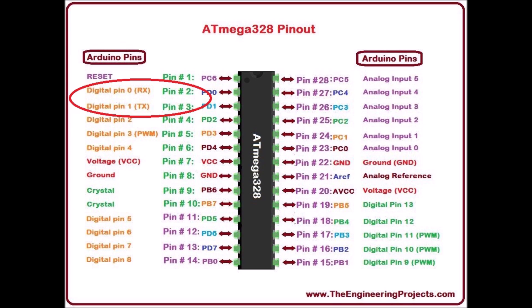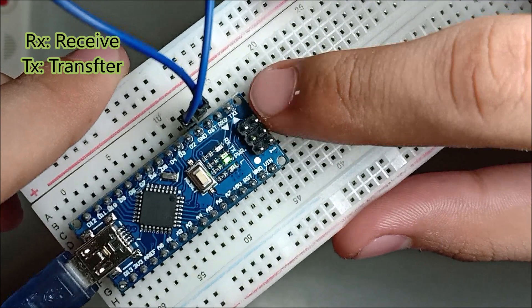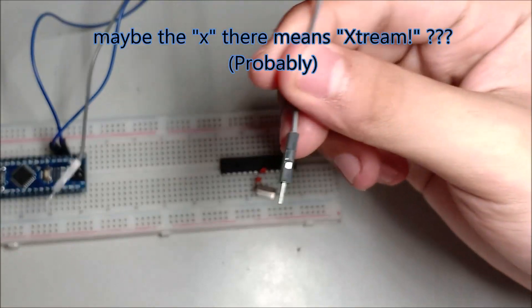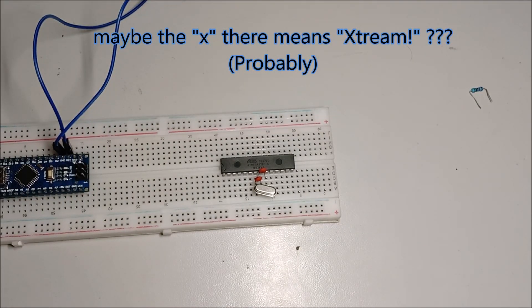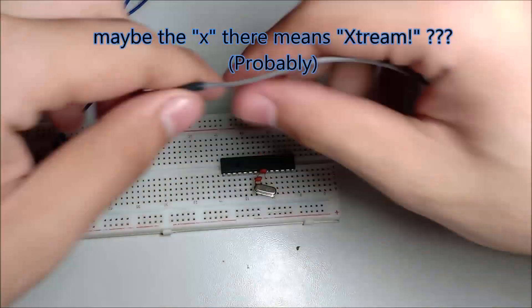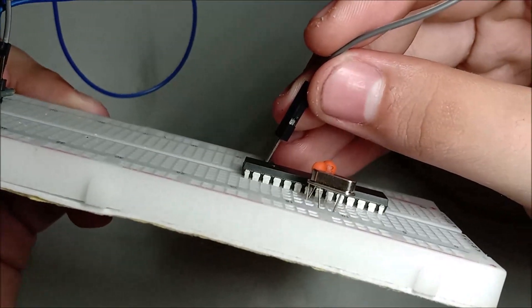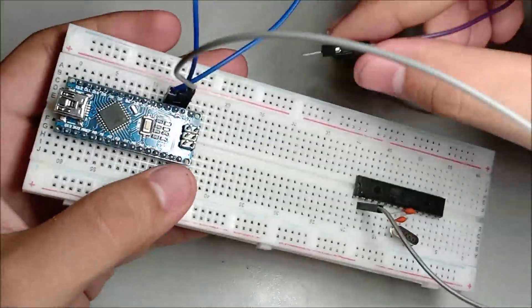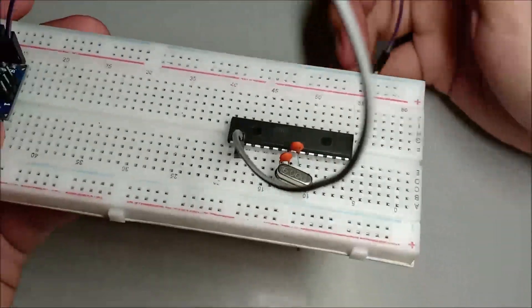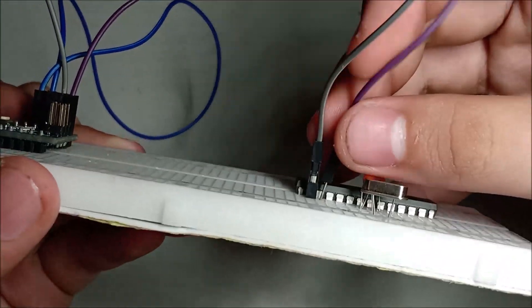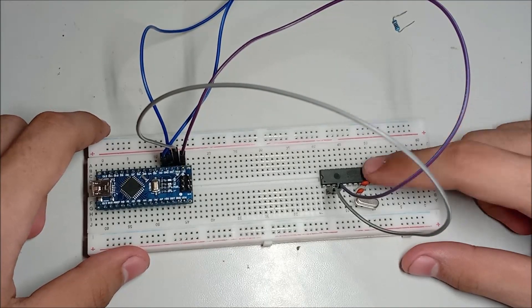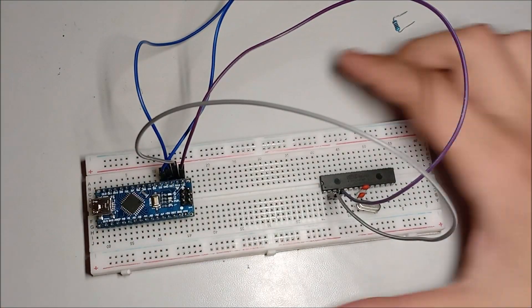The next thing you want to do is connect the RX and TX. RX is for receiving and TX is for transmit. The RX is at pin 2 and the TX is at pin 3 on the isolated chip. Just look over your board, find the RX and connect it to pin 2, find TX and connect it to pin 3.